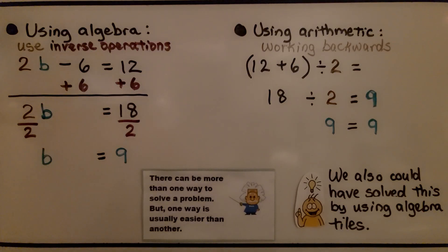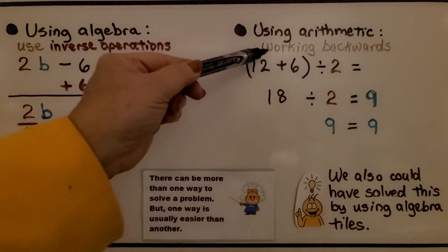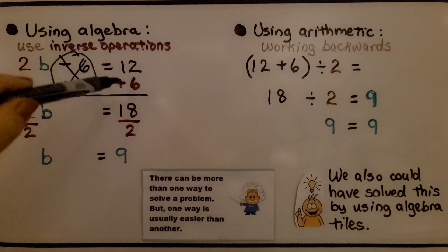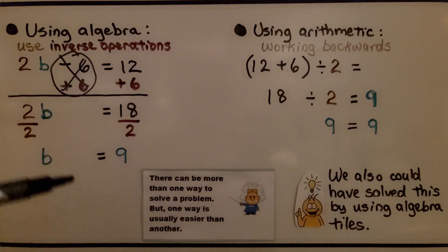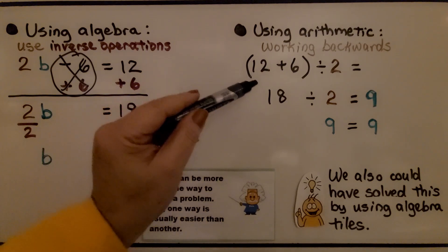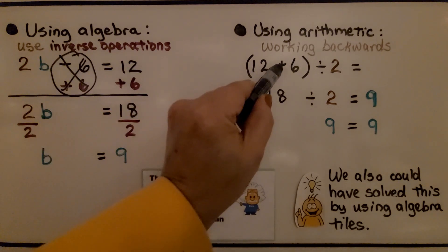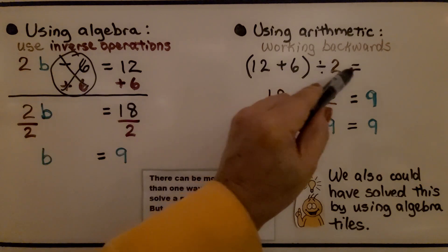The problem could be solved using algebra, using inverse operations, or using arithmetic by working backwards. We created a zero pair with minus 6 plus 6 and eliminated it. Added 6 to this side and got an 18, which is starting to isolate our variable to one side. We divided both sides by the coefficient 2 and got 1b equals 9. And over here, we worked backwards. We started with the 12, and instead of subtracting 6, we added 6 and then divided by 2.